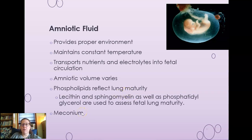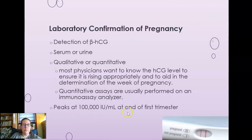Meconium is the first bowel movement of the baby. Sometimes it can happen during birth or in the amniotic fluid, which is a problem if the baby swallows it. For laboratory confirmation of pregnancy, we detect the beta subunit of HCG. This can be done on serum or urine — the over-the-counter pregnancy test uses urine, but blood can be drawn at a clinical setting.